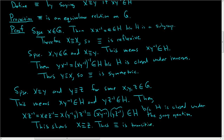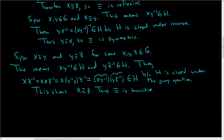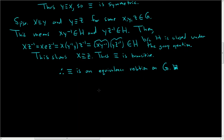We've proven that our relation is reflexive, symmetric, and transitive, so our special relation is an equivalence relation on G. That concludes the proof. Now, what is this for? There's a construction we're going to create called cosets.